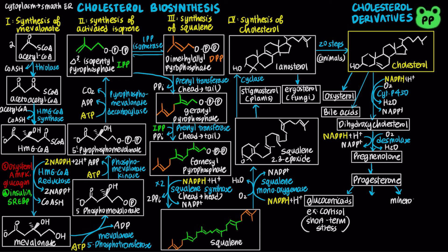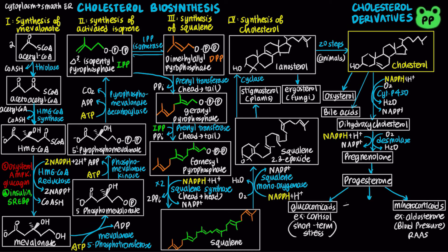Mineralocorticoids, such as aldosterone, regulate blood pressure through the renin-angiotensin-aldosterone system. Testosterone and estradiol are sex hormones that regulate the reproductive system. More details about these pathways have been covered in a separate animal physiology video on the endocrine system.